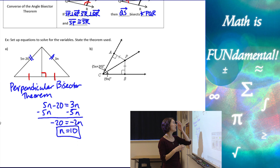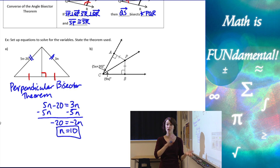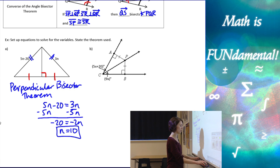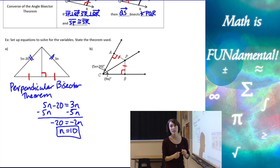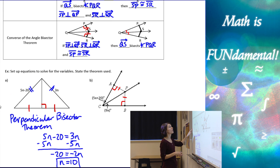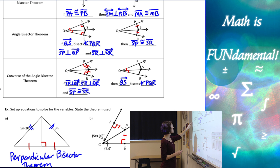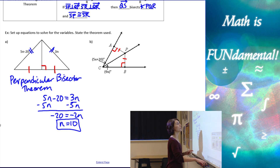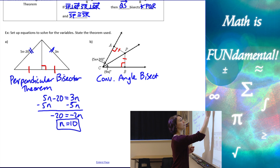Now let's look at our next example. We have a picture that kind of looks like our angle bisector theorems. We need to figure out if it's the converse or just the regular angle bisector theorem. Looking at the given information, we're given perpendicular lines and that one segment is congruent to another. That matches the converse of the angle bisector theorem, so that's the theorem we're going to use.